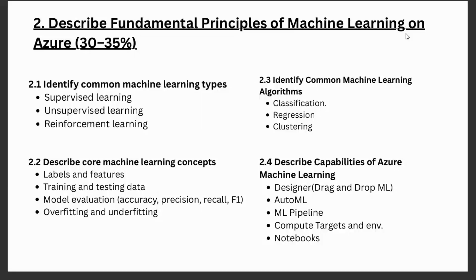The second module is Describe Fundamental Principles of Machine Learning on Azure. This is one of the biggest modules, covering almost 30 to 35 percent of the exam, so it is very important from an exam point of view. Here we will discuss the types of machine learning: supervised learning, unsupervised learning, and reinforcement learning. We will also understand core ML concepts like labels, features, and what is training and testing data.